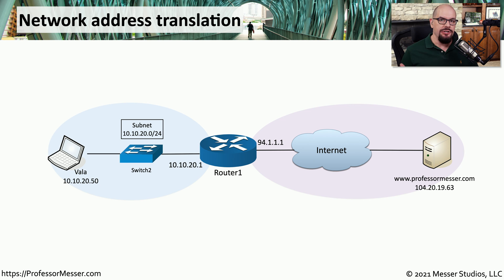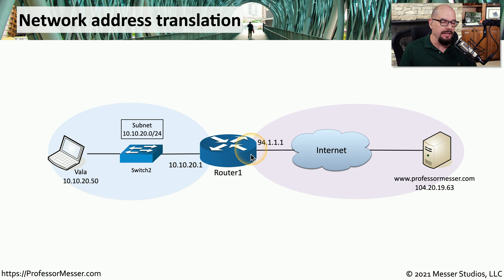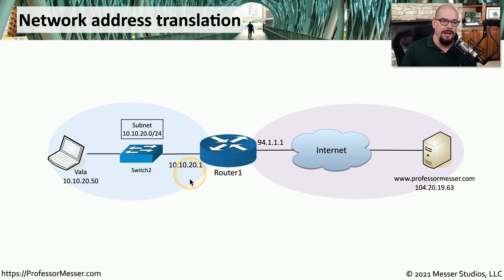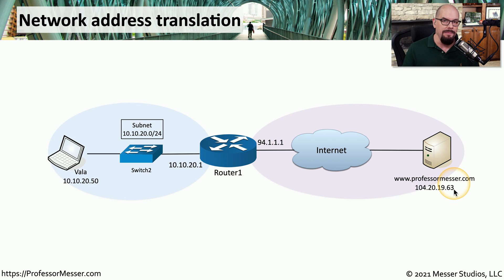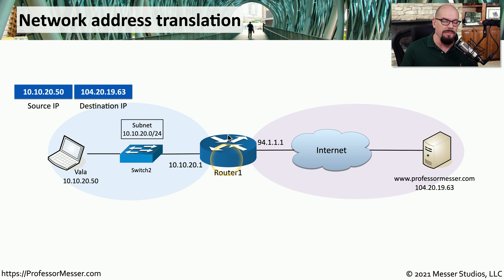Very simply, network address translation is when a device changes an IP address as it's communicating through the network. This is commonly done using a router, and in this particular example, this router is providing that translation functionality. On the left side is our private network, with a private address range of 10.10.20.0/24, which means the router and VALA, the device on the left side, are all communicating using these private IP addresses. But VALA would like to talk to the professormesser.com web server, which has a public IP address, so we'll use our router to perform that translation.